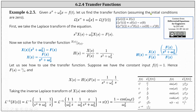But because all initial conditions are zero, we know x(0) is zero and so is x prime of zero, leaving us with just s squared times X(s) plus the Laplace transform of omega sub zero squared x, which is equal to omega sub zero squared times X(s). On the right, the Laplace transform of F of t is F(s).